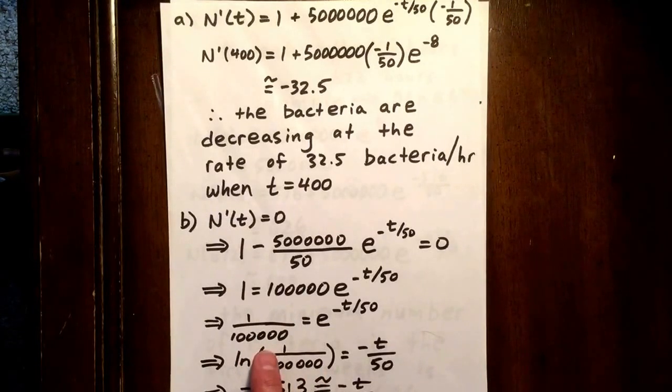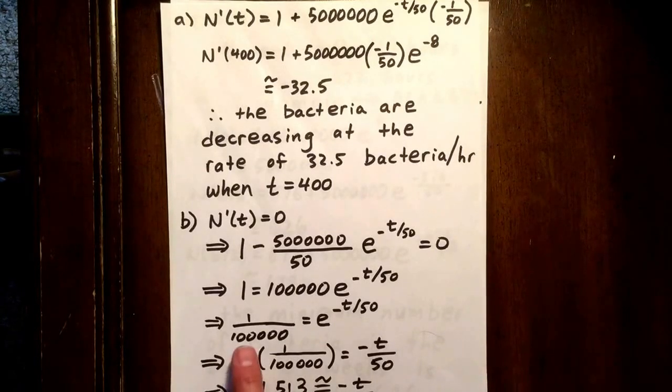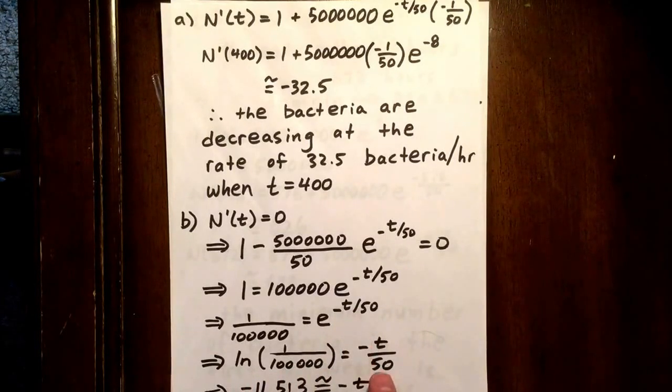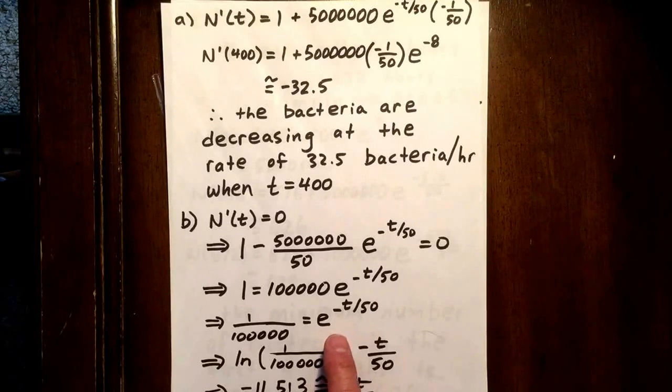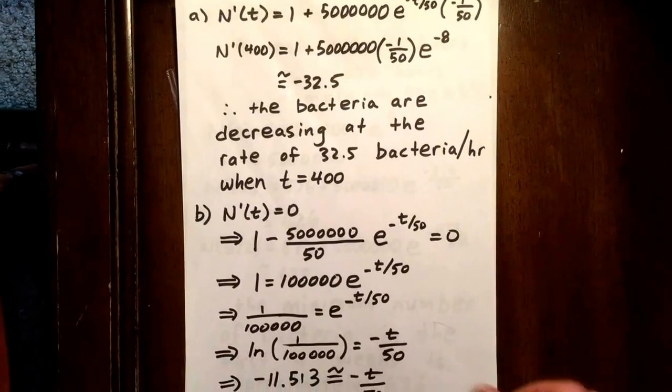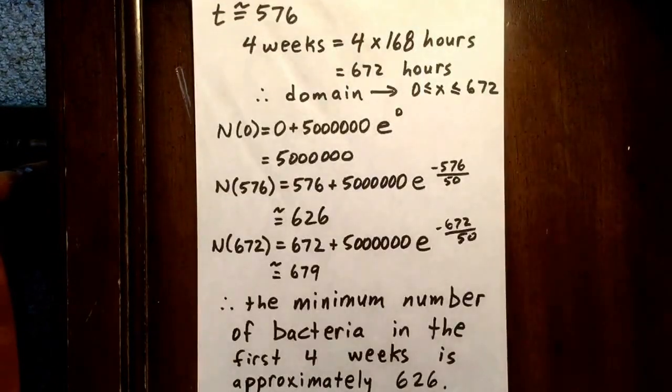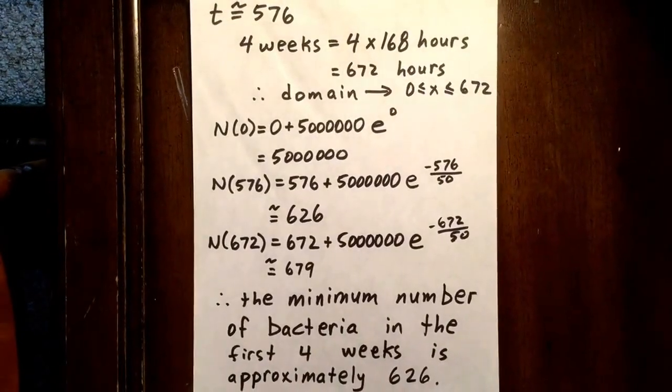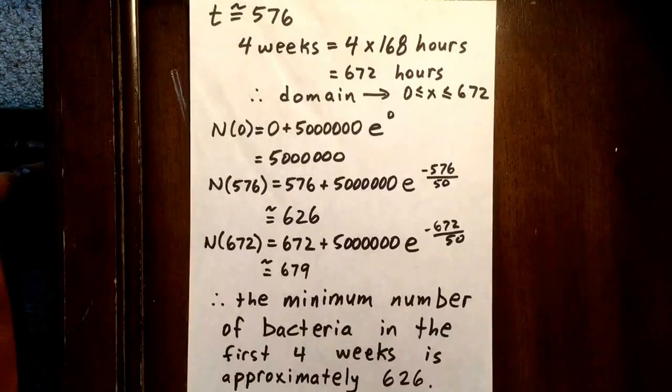Divide both sides by 100,000 and we get this equation right here. We can take the natural logarithm of both sides, taking the natural logarithm of the left and taking the natural logarithm of the right. Well, when you take the natural logarithm of a power with a base of e, you're just left with the exponent. So the natural logarithm of 1 over 100,000 equals negative t over 50. So negative 11.513 is approximately negative t over 50. Solving that out gives you a t value of approximately 576.